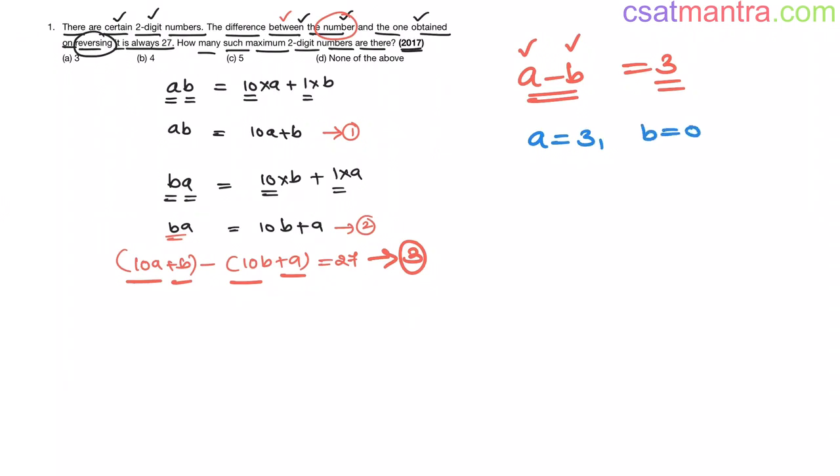A can be 3 and B can be 0. 3 minus 0 equals 3. A cannot be less than 3 my friends, and A should be greater than B all the time because A minus B is positive 3.